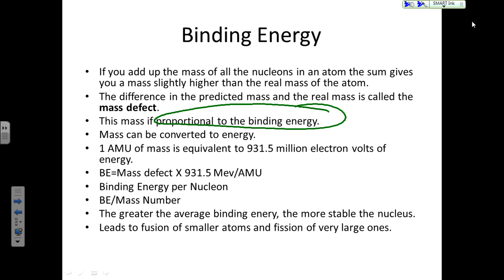One AMU of missing mass, mass defect, is equivalent to a pretty good deal of energy. 931.5 million electron volts of energy. Mass can be converted to energy. A little bit of mass converts to a whole lot of energy. So if you want to calculate the binding energy of something, you take its mass defect, the amount of mass it seems to be missing, and multiply that by 931. What's that big M there stand for? In front of the EV. Mega. Mega electron volts per AMU. And, as we said last time, the greater the binding energy of an atom, the more stable it is. The more binding energy, the more stable.